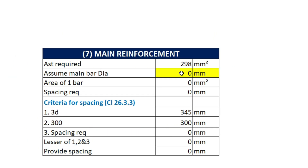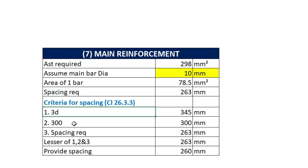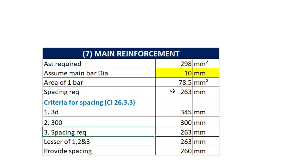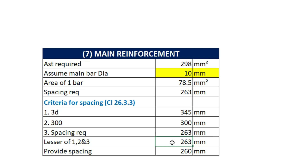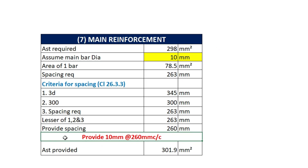Moving to the seventh step, in which we only need to assume the diameter of the main bar. Let's provide 10 mm diameter bars; the area of one bar will be calculated as 78.5 mm square. The spacing required will be 263 mm. The spacing of main bars is decided by clause 26.3.3, according to which the spacing shall be the lesser of 3D (where D is the effective depth), 300 mm, or the spacing required. As 263 mm is the lesser value, let's provide 260 mm spacing. Hence we provide 10 mm diameter bars at 260 mm center to center. The area of steel provided for the main bars will be 301.9 mm square.